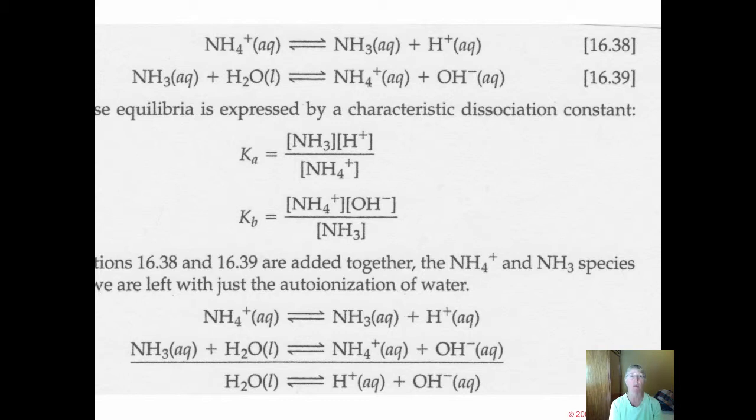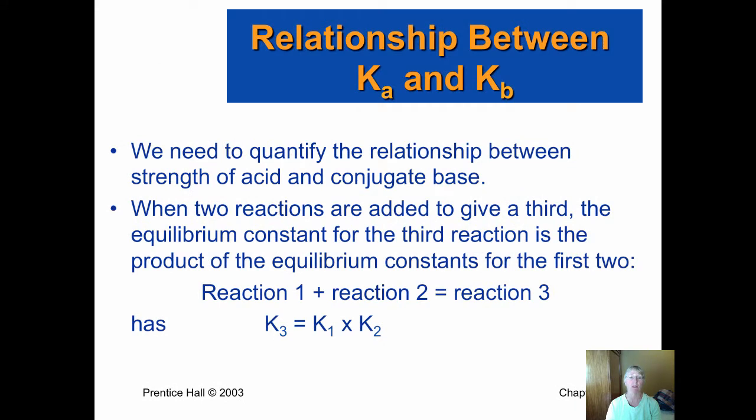So as you know, when we sum two equations, if we know the equilibrium constant for each of those two equations, the summing of them to come up with a net equation, to find the Kq for the net equation, you just multiply them. So when two reactions are added to give a third, the equilibrium constant is found by just finding the product of the Ka's and Kb for each of the two constituent reactions.